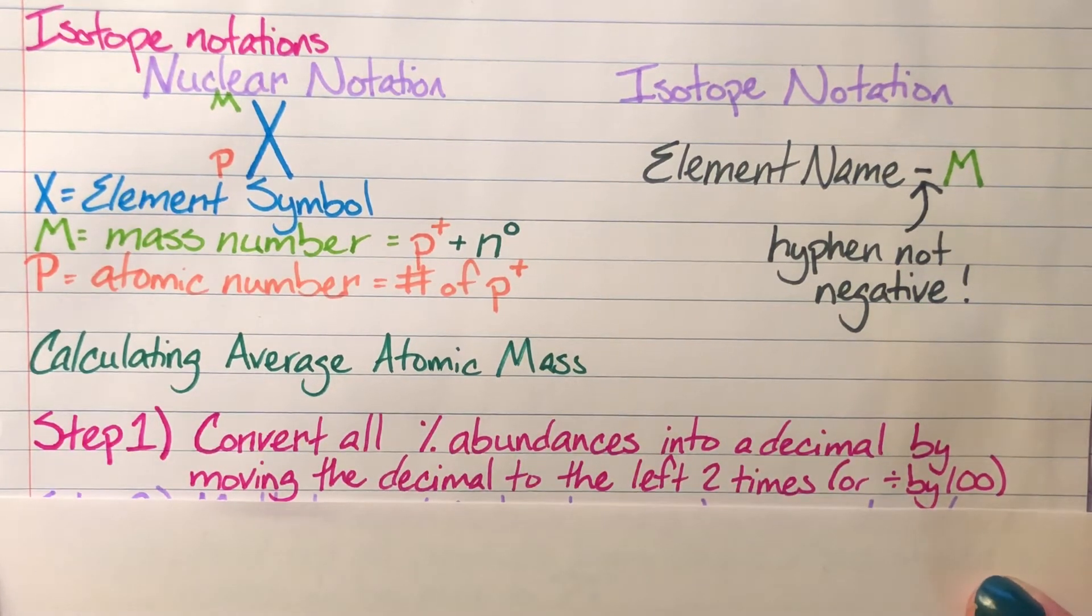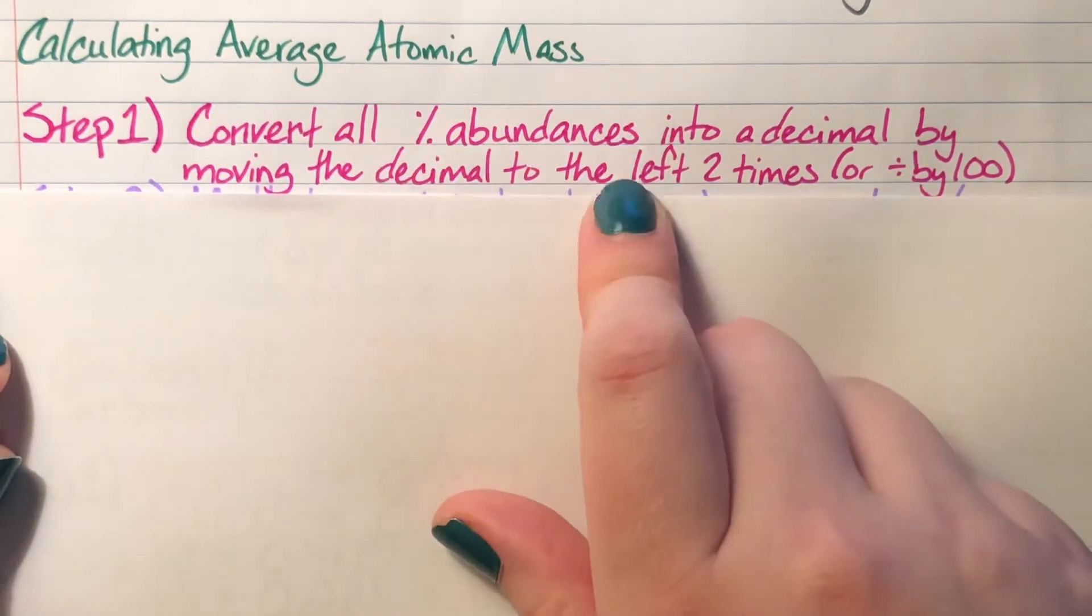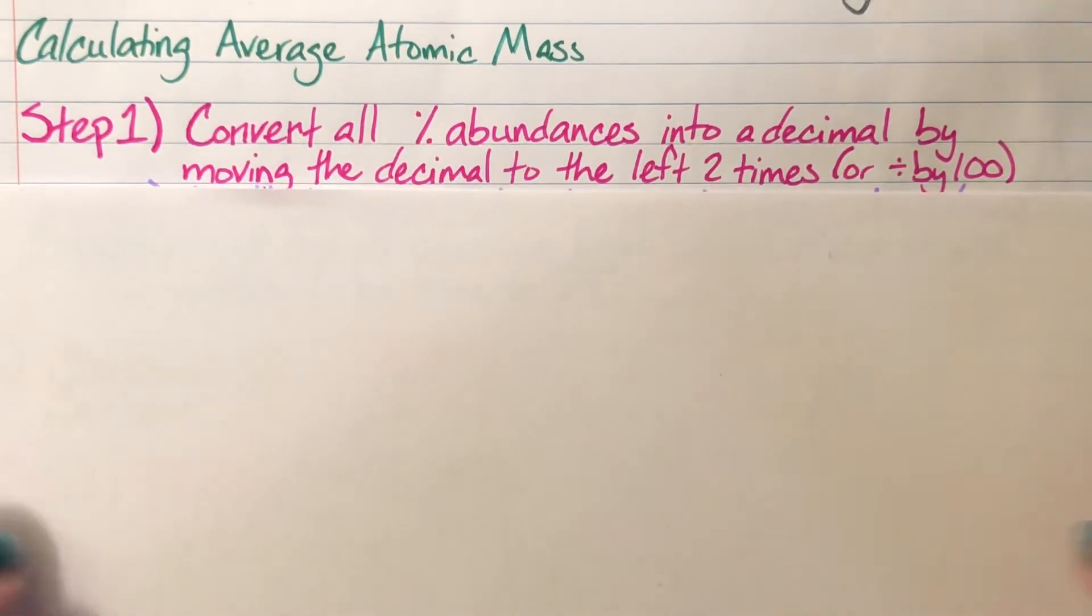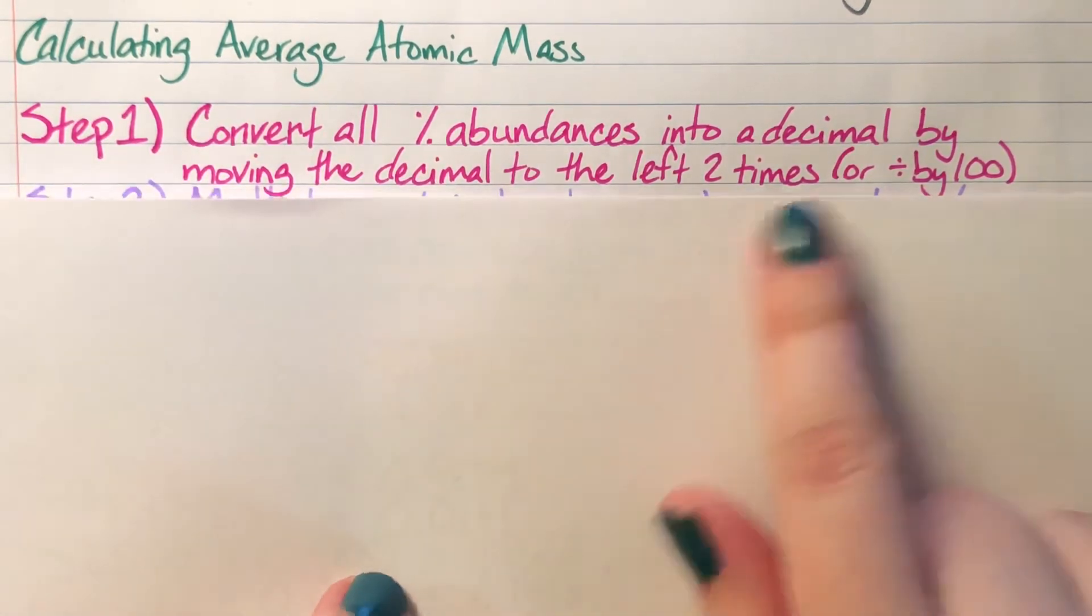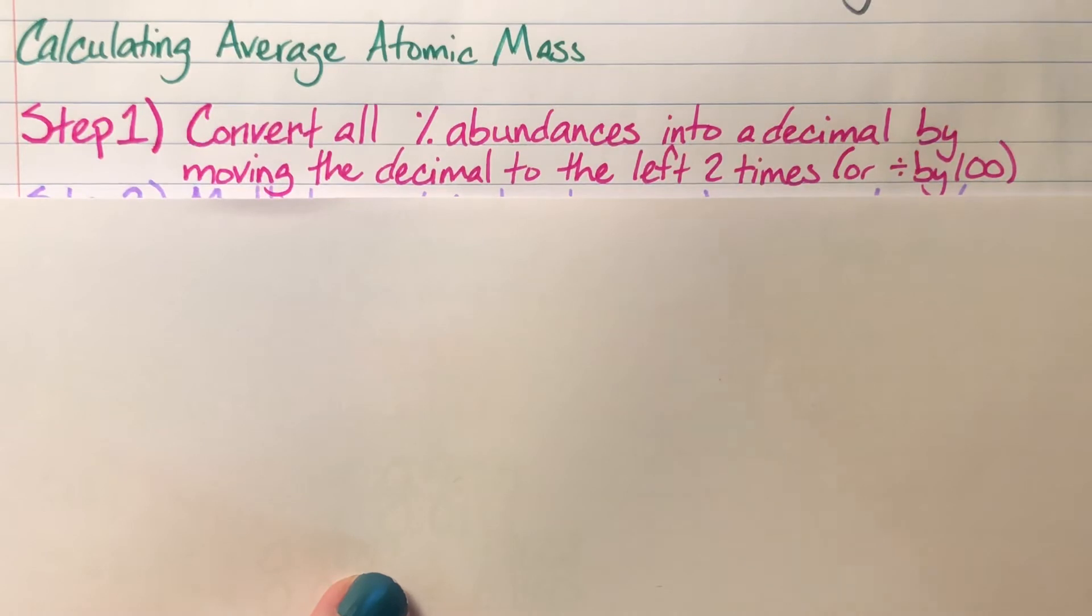Step one: Convert all percent abundances into decimals. Percent abundance is how likely we are to find that particular isotope on Earth. You can do this one of two ways—either move the decimal to the left two times, or divide that percentage by 100, which does the exact same thing. Whenever we're calculating average atomic mass, we start by converting all percentages into decimal forms so we can use them for calculations.